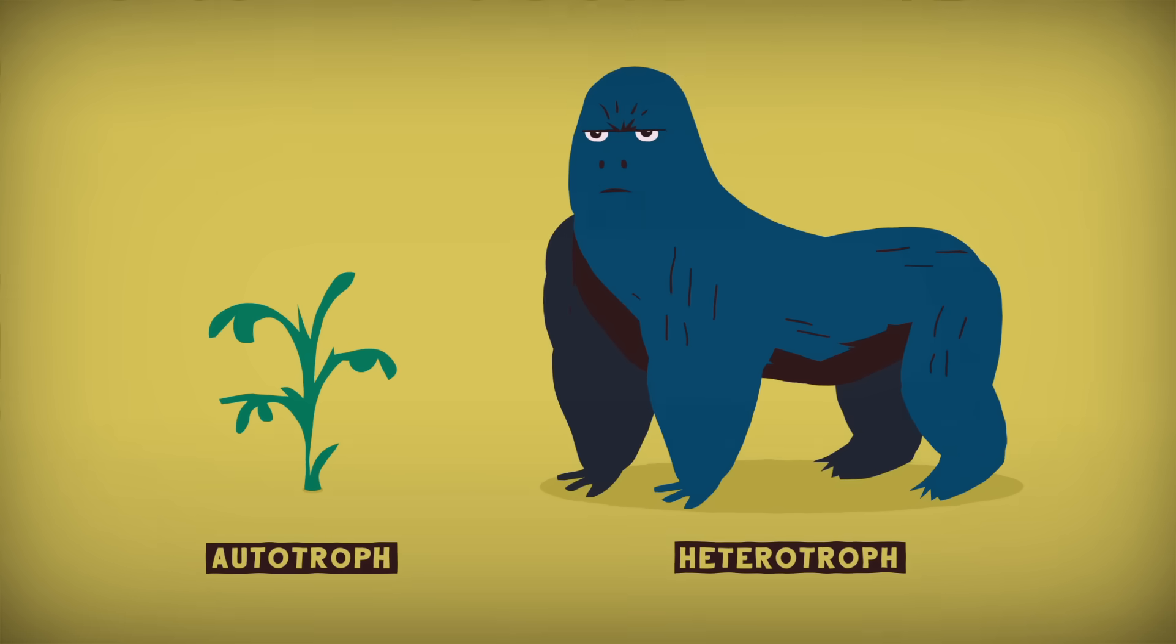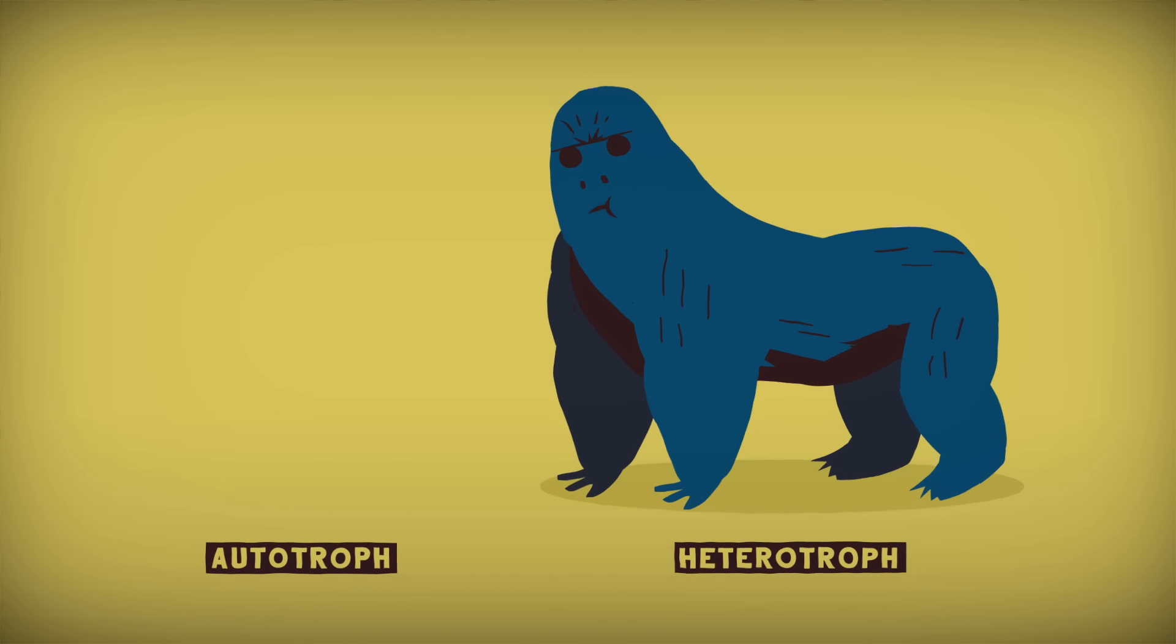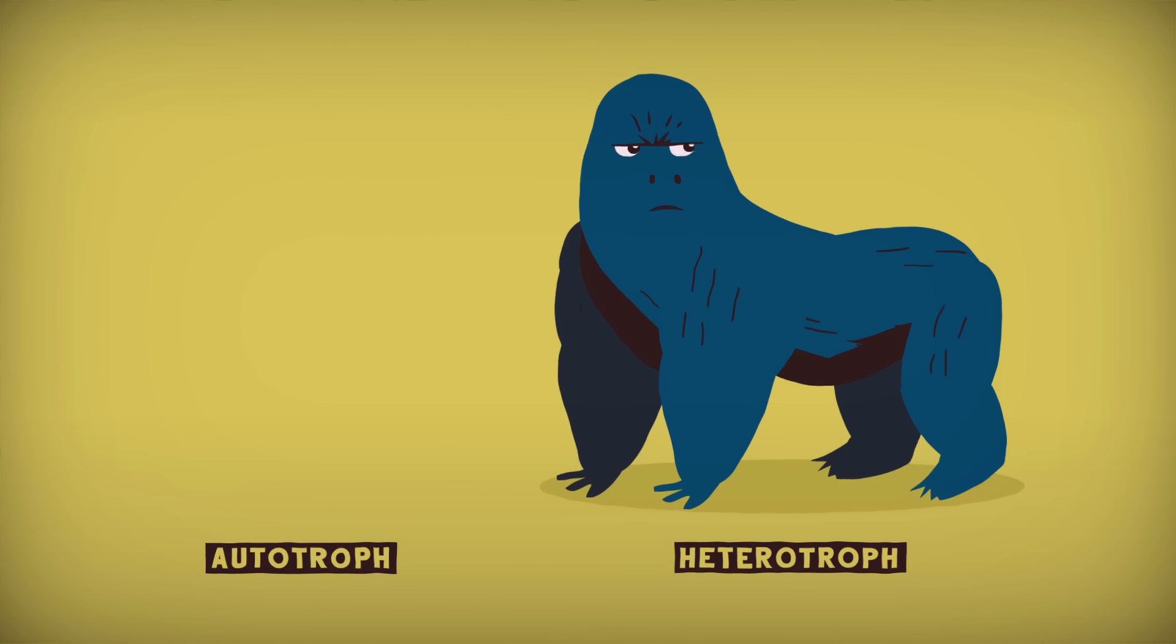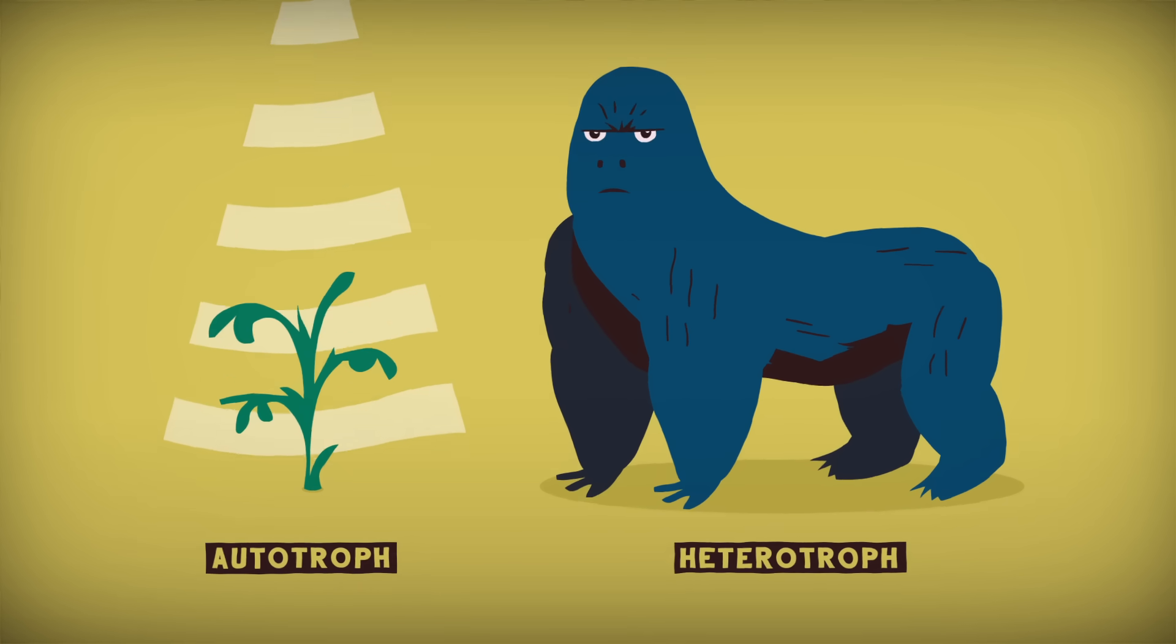Life forms are divided into two camps—autotrophs, like plants, that generate their own energy, and heterotrophs, like animals, that consume other organisms for energy. The first life form wouldn't have had other organisms to consume, of course, so it must have been an autotroph, generating energy either from the sun or from chemical gradients.